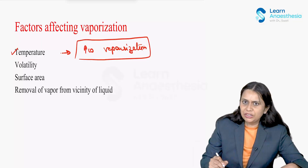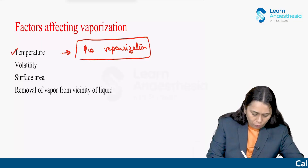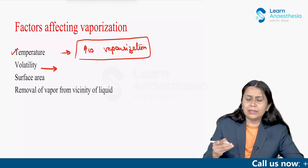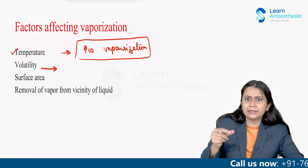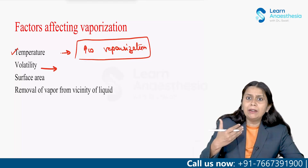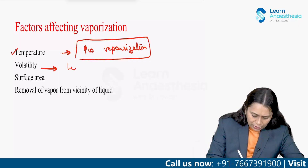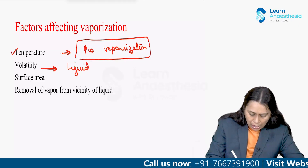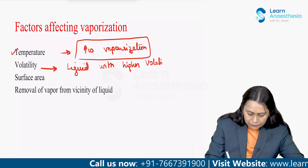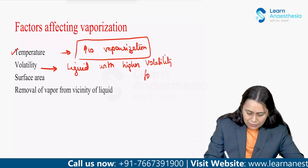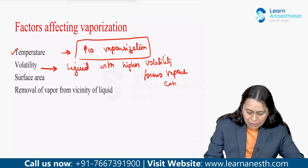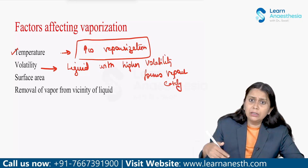Another factor affecting vaporization is volatility. If a liquid is more volatile, the cohesive force is less, so it forms vapor faster. Liquids with higher volatility form vapor more easily compared to liquids with low volatility.